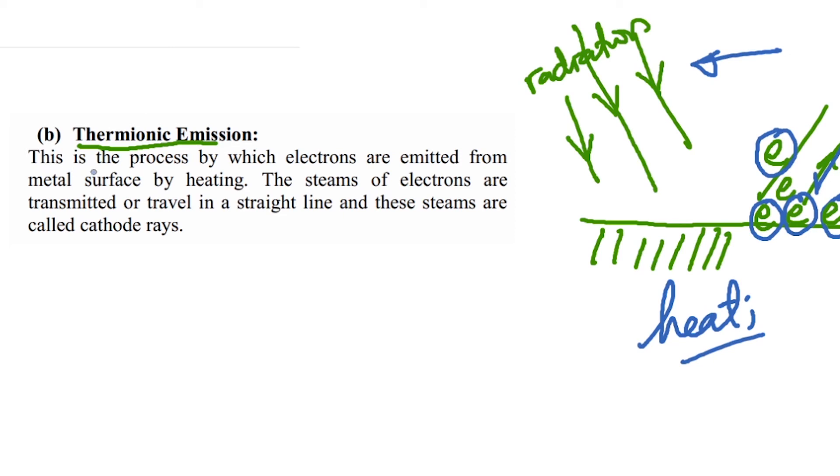So thermionic emission is the process by which electrons are emitted from the metal surface by heating. The streams of electrons are transmitted or travel in a straight line, and these streams are called cathode rays.